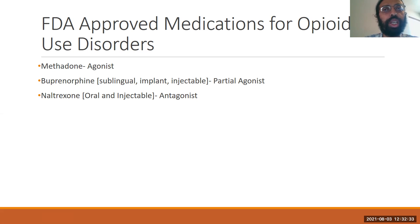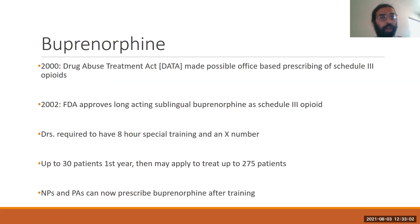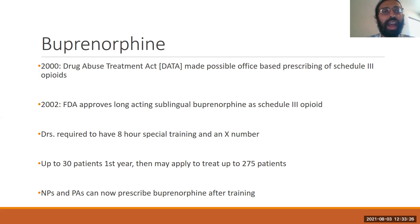The data is clear: if we're treating opioid use disorders, the centerpiece of our treatment must be one of our FDA-approved medications for opioid use disorder. These include methadone — our full mu agonist, around since the 1970s — naltrexone, both oral and injectable, which is our antagonist treatment — and the focus of this ECHO: buprenorphine in all of its forms, which is a partial agonist, around since 2000. The Drug Abuse Treatment Act was passed by Congress in 2000, paving the way for buprenorphine becoming FDA approved as a Schedule III medication in 2002. Initially physicians alone could prescribe; then in 2016 with the CARA Act, nurse practitioners and physician assistants also became eligible to prescribe buprenorphine.